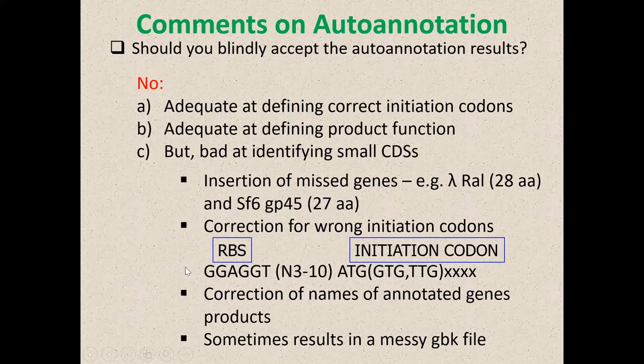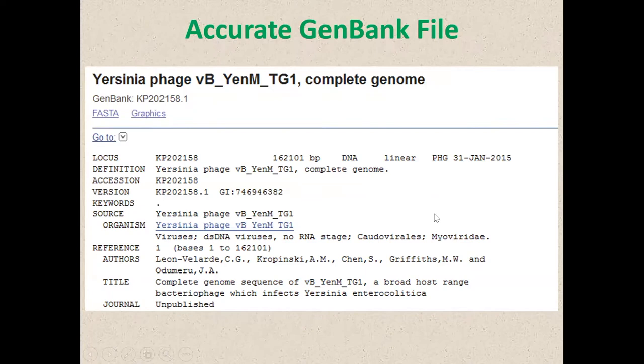Correct the wrong initiation codon: you have an initiation codon with the ribosome binding site upstream. You want to make sure the ribosome binding site is upstream from the nucleotide trimer you've chosen. You then need to correct the names of annotated genes, and unfortunately when you do this, occasionally you get a messy report.